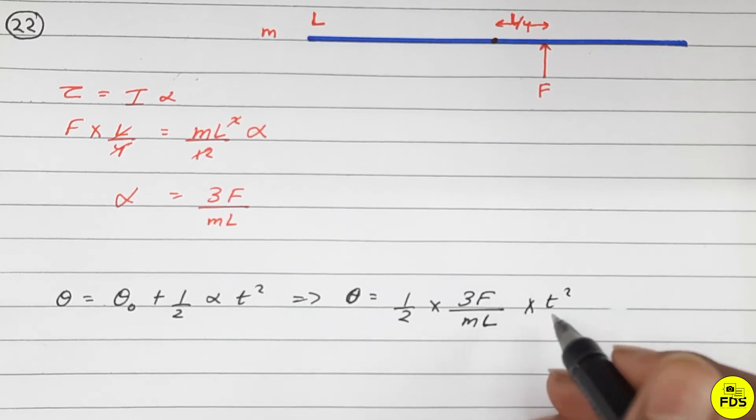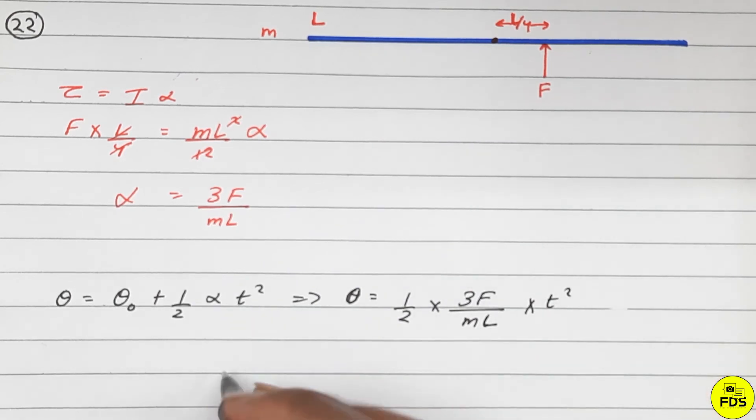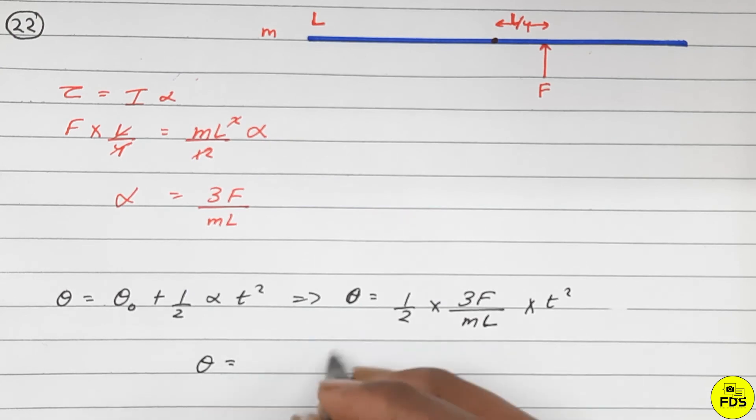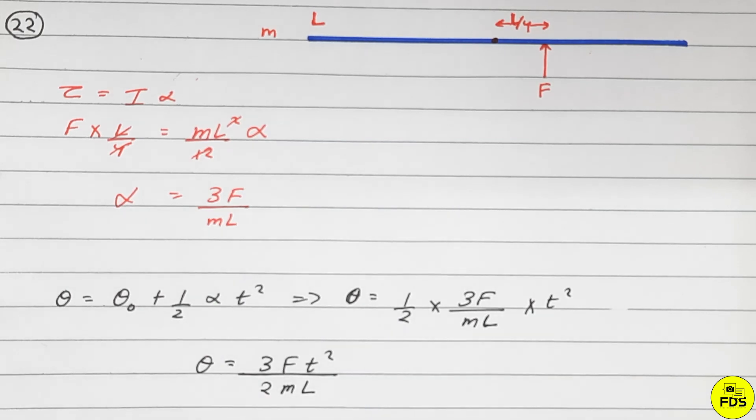So the theta is actually 3F times t squared upon 2mL. So this is our answer.